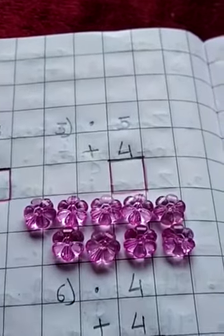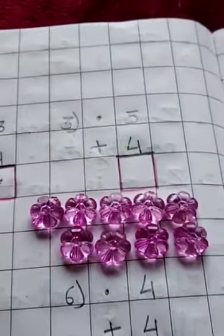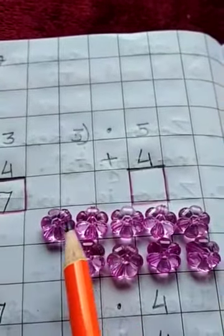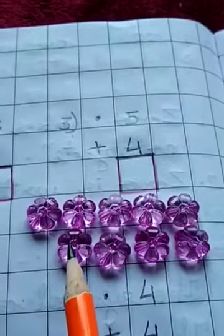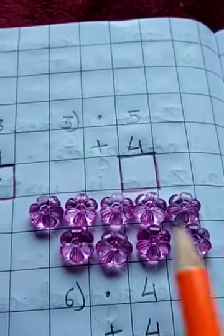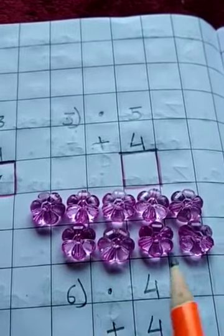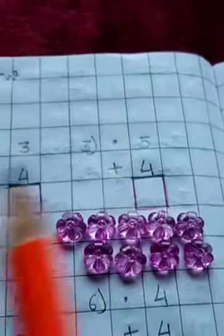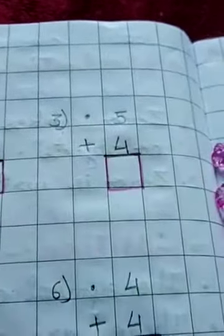Now I am again using beads. So let's count. 1, 2, 3, 4, 5, 6, 7, 8, 9. These are 5 beads and these are 4 beads. So total is 9. So write down 9 here.